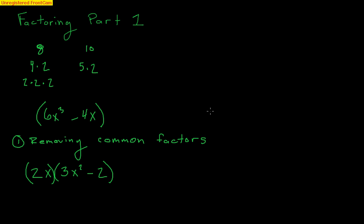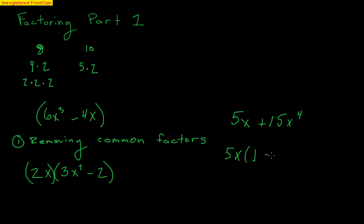Let's look at a second example with removing common factors: 5x + 15x⁴. We have two terms — it's a binomial, fourth degree. Between 5 and 15, I can take out a 5. And I can only take away one x because this term just has x. So I'm left with 5x times (1 + 3x³). Five divided by 5 is 1, and 15 divided by 5 is 3, with one x removed leaving x³. Just like 8 and 10, this is nothing more than a number — we just don't know it yet because of the x's.